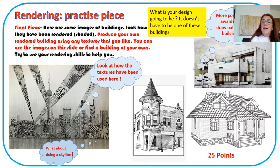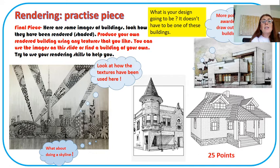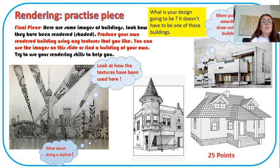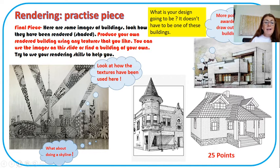Now here is a final piece that we're looking for from you. Here are some images of buildings — look how they've been rendered, so shaded. Produce your own rendered building using any of the textures that you like. You can use the images on this slide or find a building of your own. Try to use your rendering skills to help you. We've got all of these buildings that you can see that we've sourced here. I have put a little thing at the bottom that says, what about doing a skyline? These can look really fantastic.